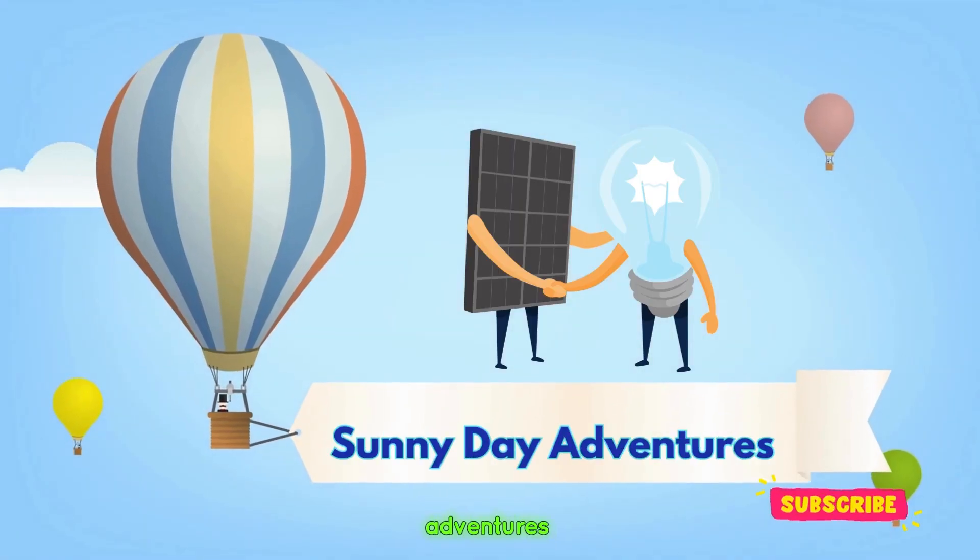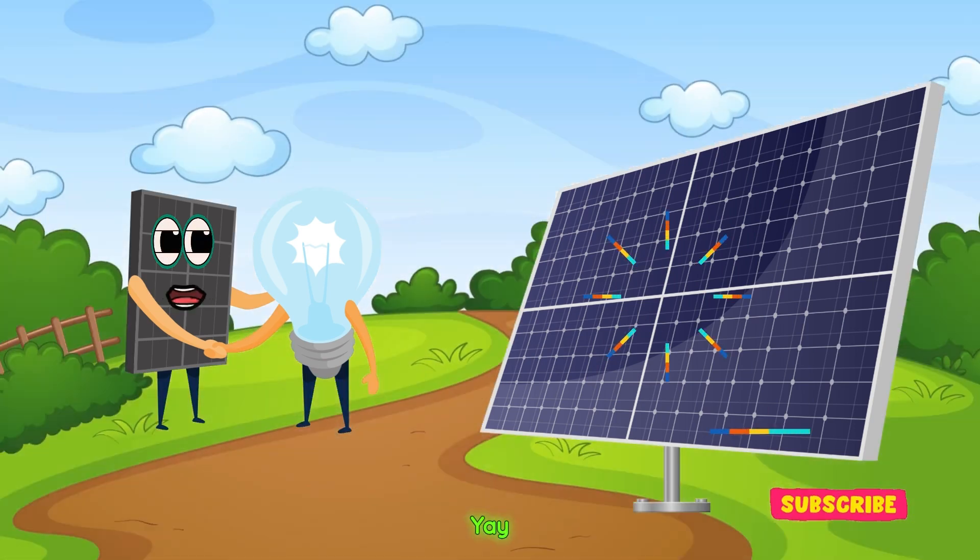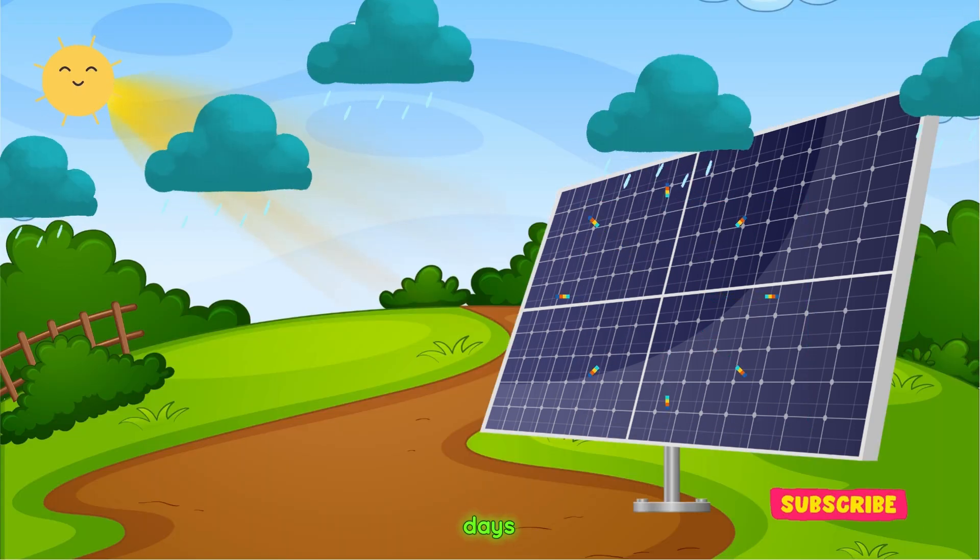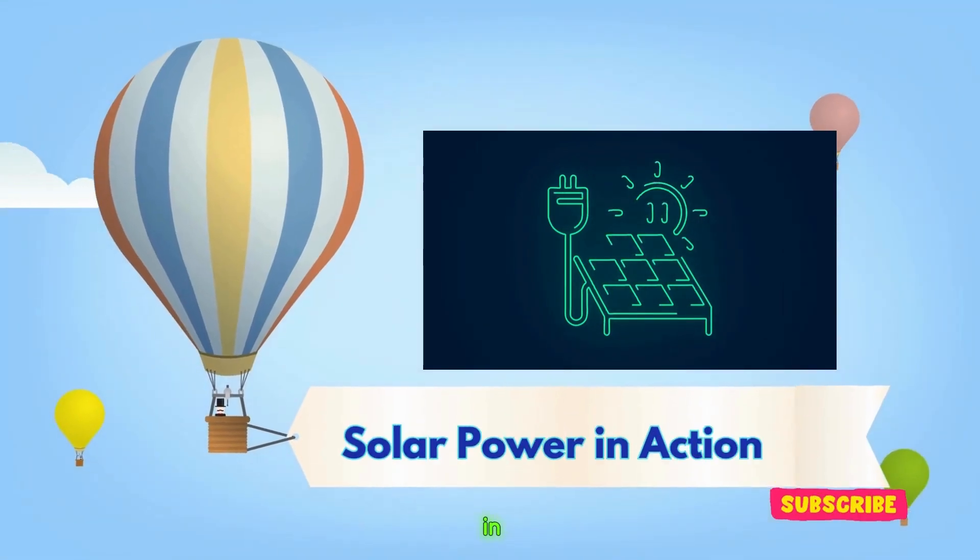Sunny Day Adventures. On sunny days, the solar panel family is very busy. They work hard to collect as much sunlight as possible. Yay! Look how much energy we're making today. Even on cloudy days, they can still make some electricity, just a bit less than on sunny days. Solar power in action.